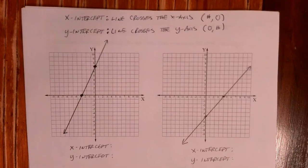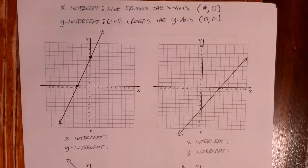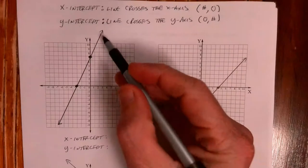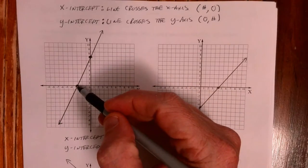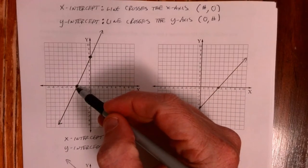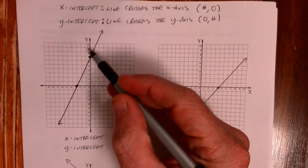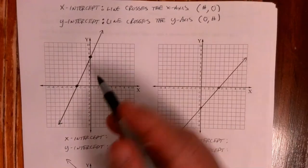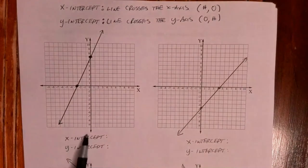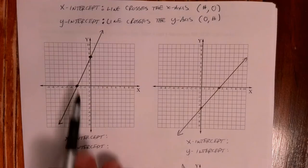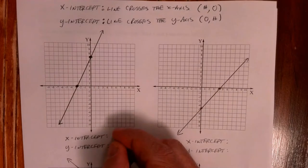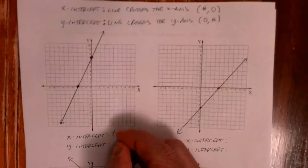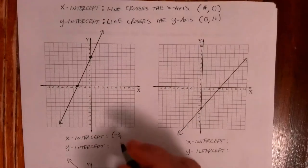X-intercept. So your assignment gives you lines and just wants the x and the y-intercept. Really, you just look — here's your x-intercept, here's your y-intercept. You just have to be able to label those points correctly. If I label what is my x-intercept: I went to the left three, so it is negative three, and then zero.